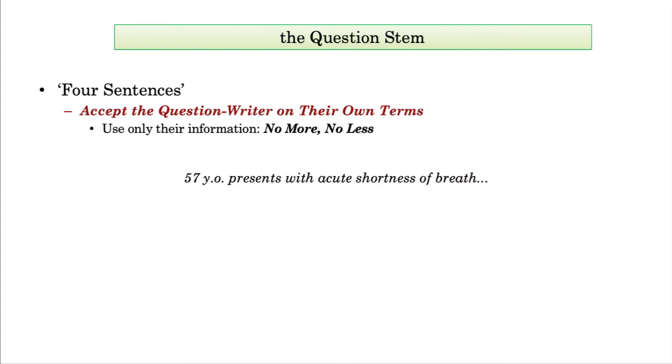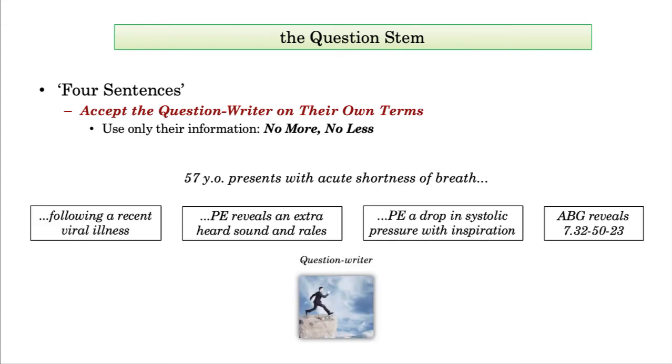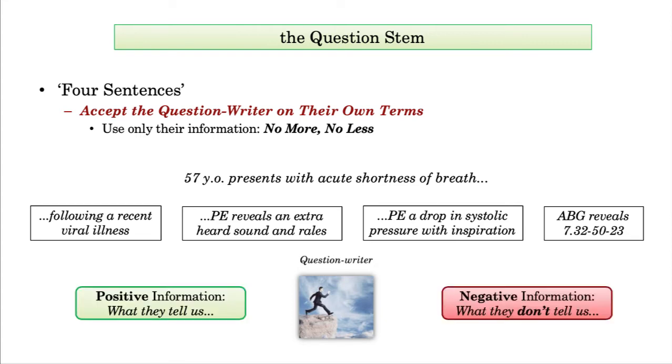So by way of example, let's look at what a question writer can do with a patient who is acutely short of breath. With a quick flick of the switch and a single modifier, that's right, one simple phrase, you travel in four completely different directions, each with a unique set of derivatives. So we're going to pay attention to what they tell us, that is, positive information, and what they don't tell us, that is, negative information.